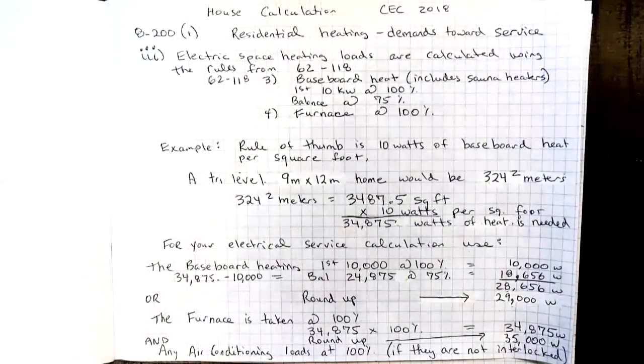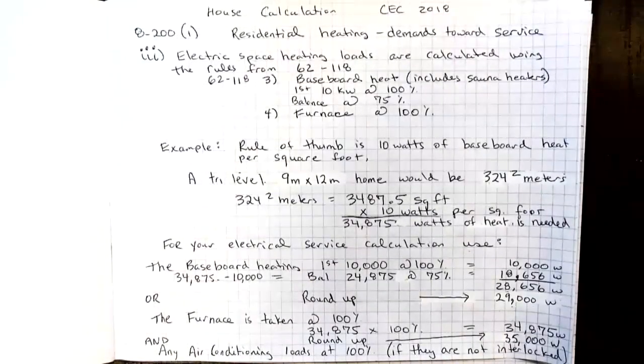Section 8201 item 3 tells us that electric space heating loads are calculated using the rules from section 62-118. When we look at that rule, 62-118, rule 3 tells us that baseboard heat, which by the way includes a heater and a sauna...